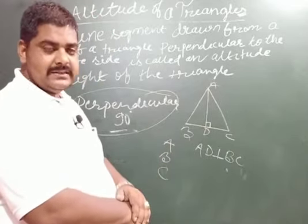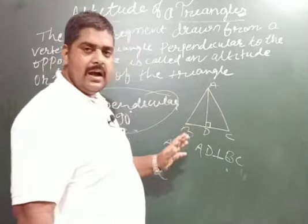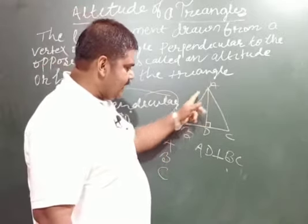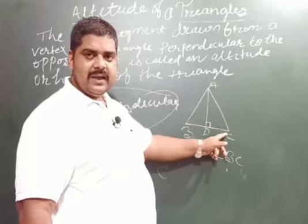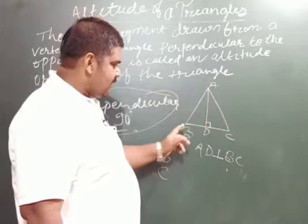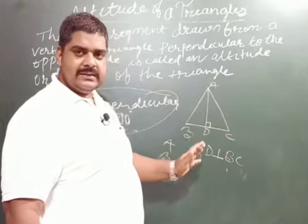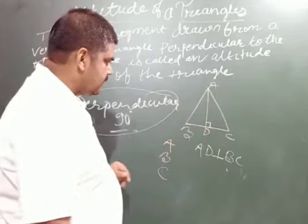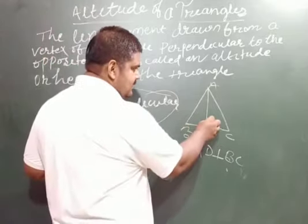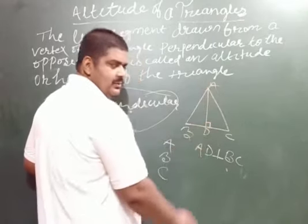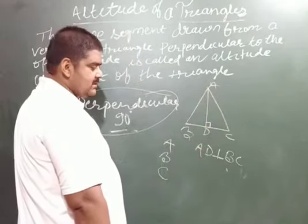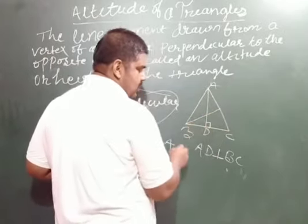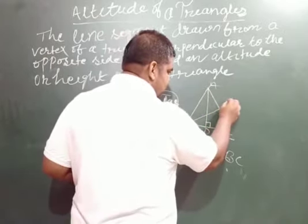The question arises: how many altitudes can you draw? A triangle has three vertices, and this is why three altitudes can be drawn. From vertex A, altitude AD has been drawn. From vertex B, you can draw altitude BE.